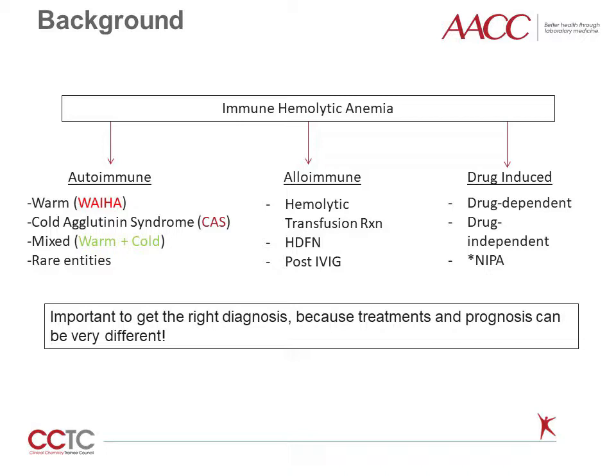The first category is autoimmune hemolysis. This is when the immune system produces an antibody which binds to the patient's endogenous red blood cells. When these antibodies bind, they can cause either immediate destruction of red blood cells within the circulatory system itself — known as intravascular hemolysis — or they can shorten the lifespan of red blood cells, usually due to increased clearance in the spleen, which is known as extravascular hemolysis.